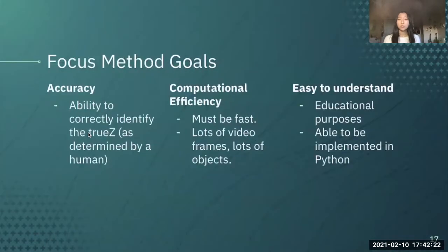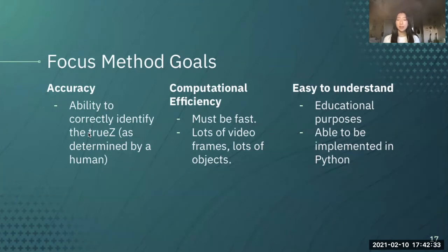Our goals with finding a focus method would be having accuracy — the ability to correctly identify the true Z as determined by a human — computational efficiency because we want it to be fast so we can use it on lots of video frames with a lot of objects, and it should be easy to understand such that students could implement it for educational purposes in Python, which is an easy to understand and accessible language.